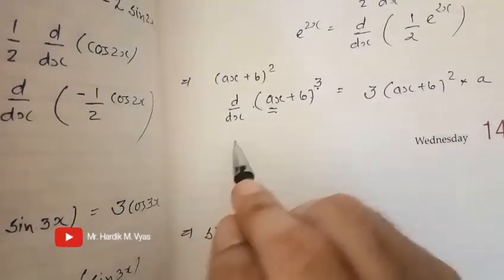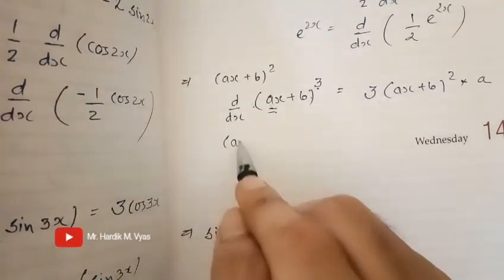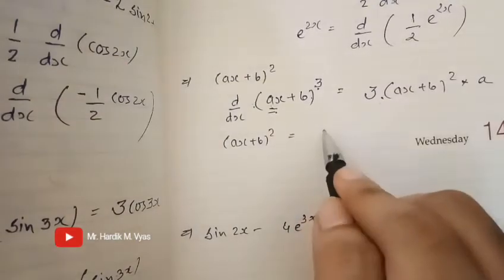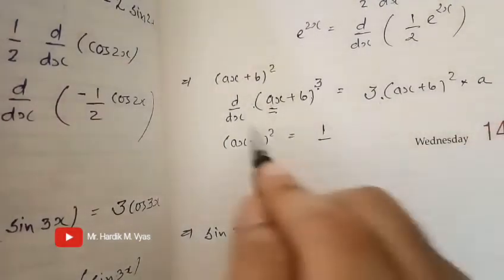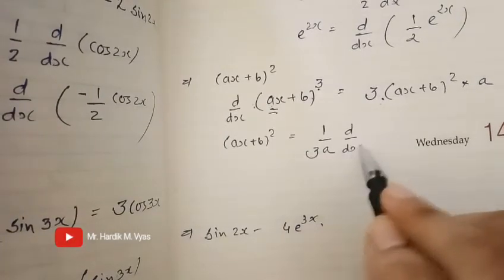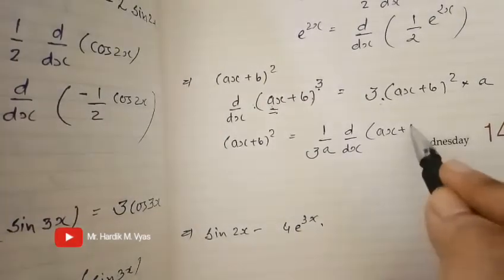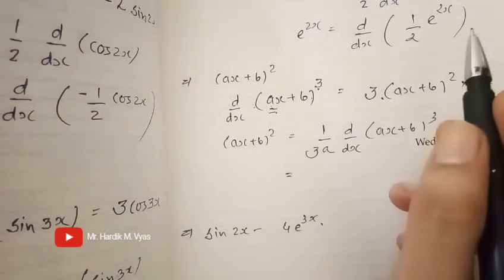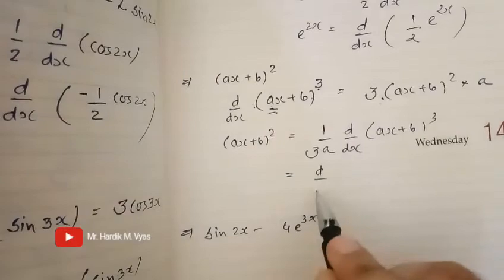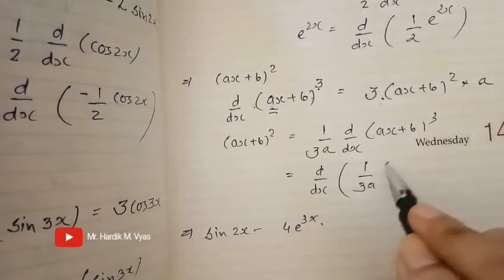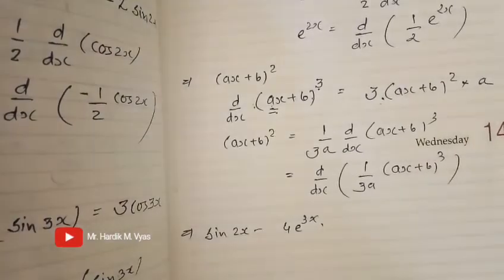I just need (ax + b) all square as it is. So 3 into a gives 3A. Therefore, d/dx of (1/3A)(ax+b)³ equals (ax+b)². The anti-derivative of (ax+b)² equals d/dx of (1/3A)(ax+b)³, so the final answer is 1/(3a) times (ax+b)³.